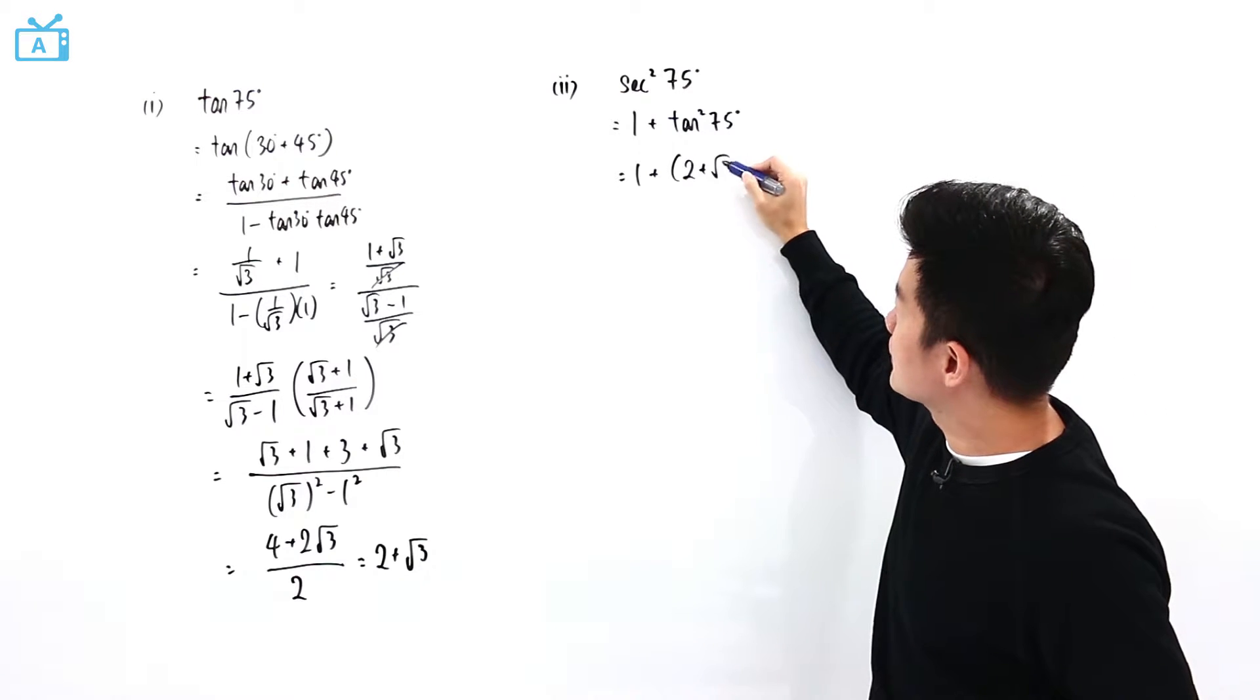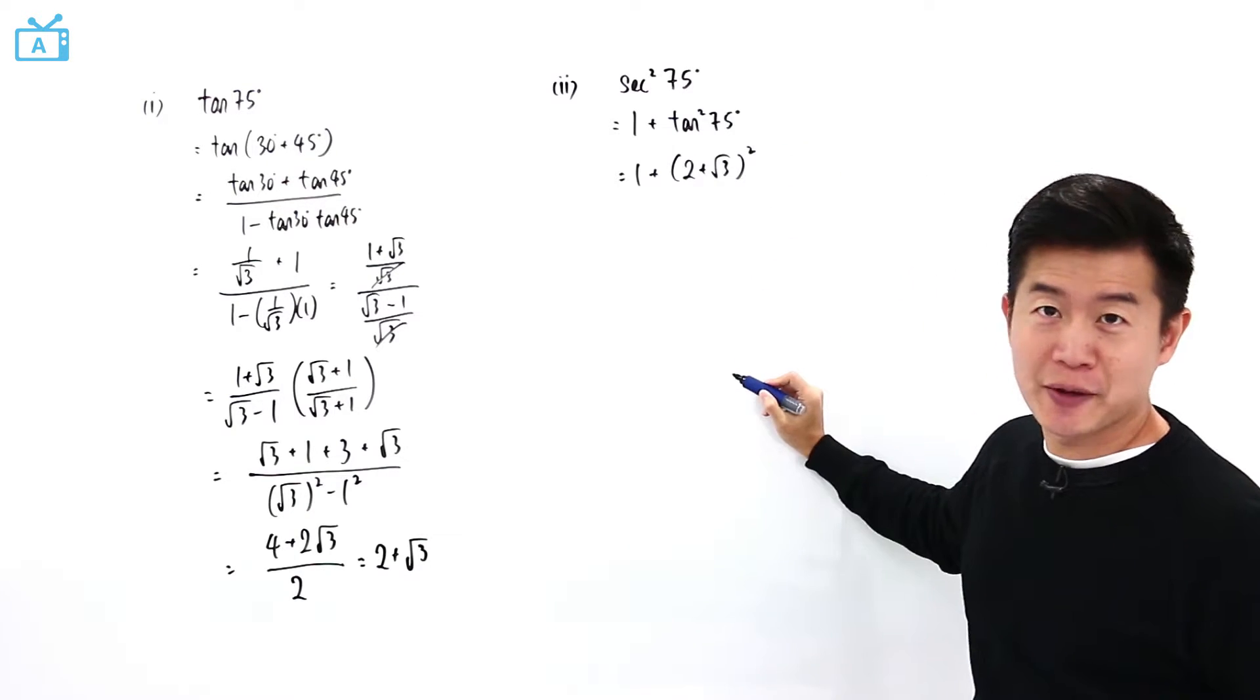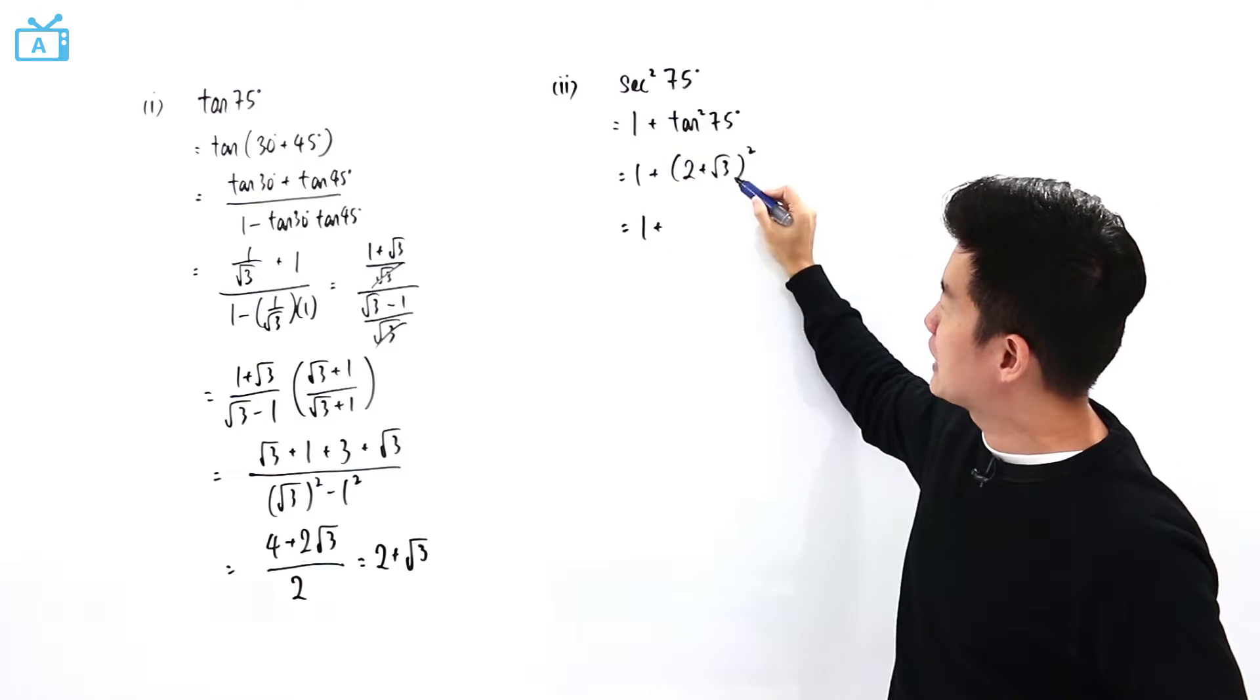So here is going to be 2 plus square root of 3 squared. So this is 1 plus, expanding this,